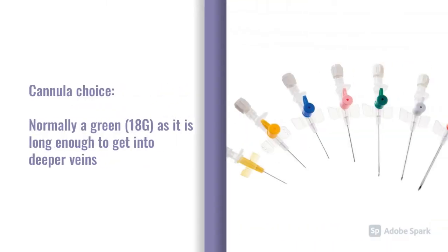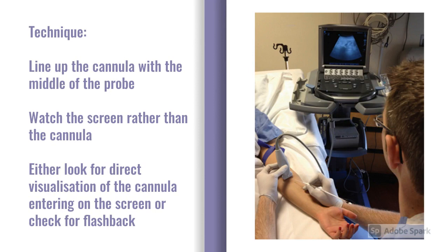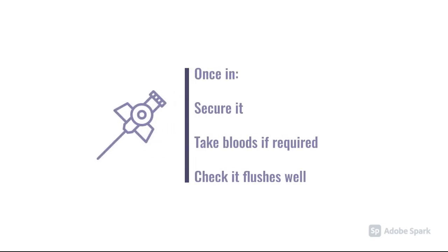Generally we'll be using a decent-sized cannula unless the vein is very superficial. A green cannula is recommended for most of these patients — particularly if they're very edematous or the vein is very deep — as a pink or blue is unlikely to reach. Line up the cannula with the probe and keep an eye on the screen as you pass through soft tissue. You can directly observe the cannula entering the vessel, or check for flashback as with normal cannulation technique. Once in, secure the cannula, take any bloods required, and make sure it flushes appropriately — if it doesn't flush, you'll need to find an alternative vein.